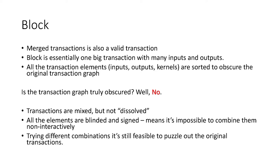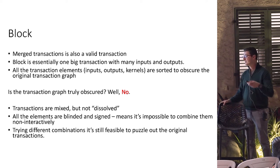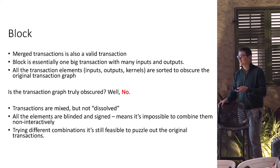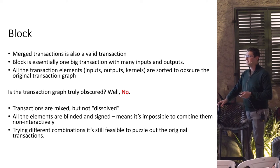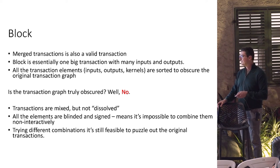How do blocks look in Mimblewimble? In Bitcoin and many other protocols, a block is just a list of transactions. In Mimblewimble it's different — a transaction is just a list of inputs, outputs, and kernels. When we merge several transactions, we get one big transaction; there's no difference between one transaction and seven merged ones. The whole block is just one big transaction with many inputs and outputs, and there is basically no way to tell which input corresponds to which output. The transactions are also sorted in some order to hide the original order.